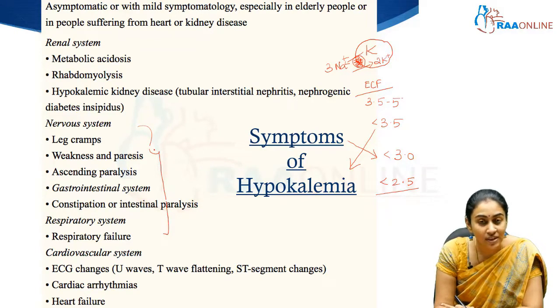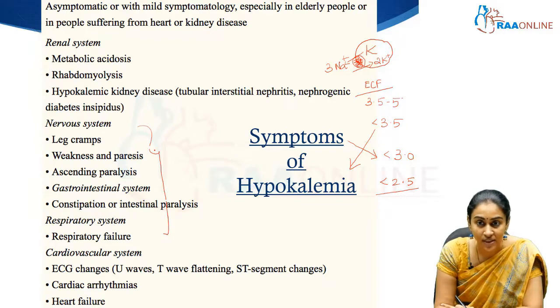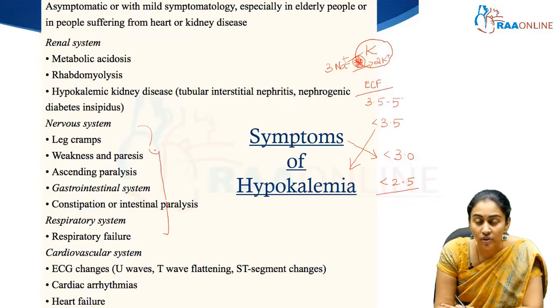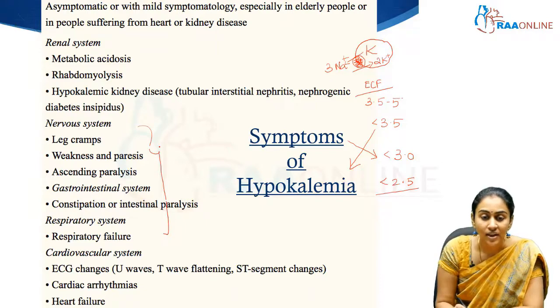Other symptoms include cramps, weakness, paresthesia, and paralysis — this being a lower motor neuron type of flaccid paralysis.